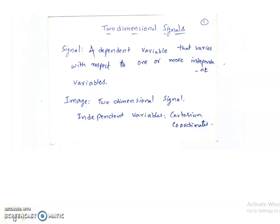Hello everyone. Let us look at two-dimensional signals and systems. We have seen what a signal is already. A signal is a dependent variable which varies with respect to one or more independent variables. In particular, an image is a two-dimensional signal whose independent variables are Cartesian coordinates — the spatial coordinates.